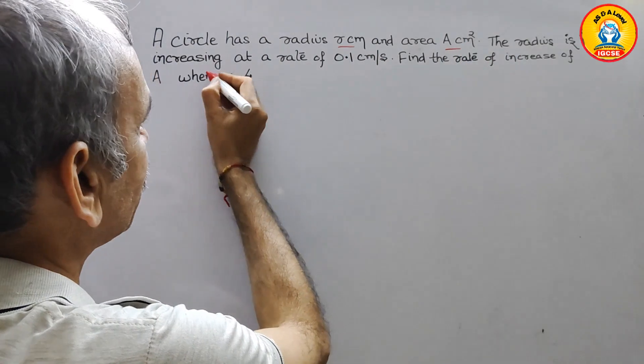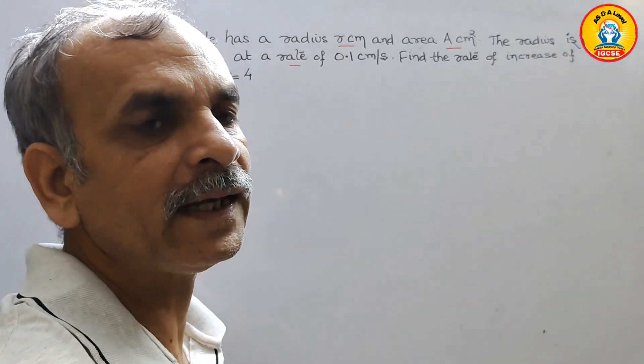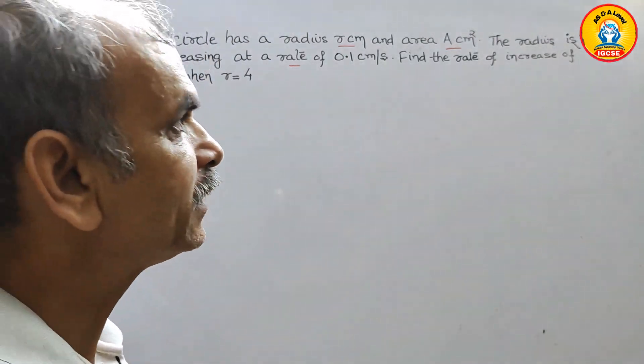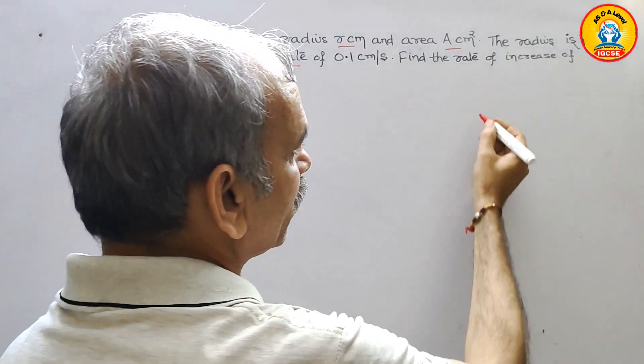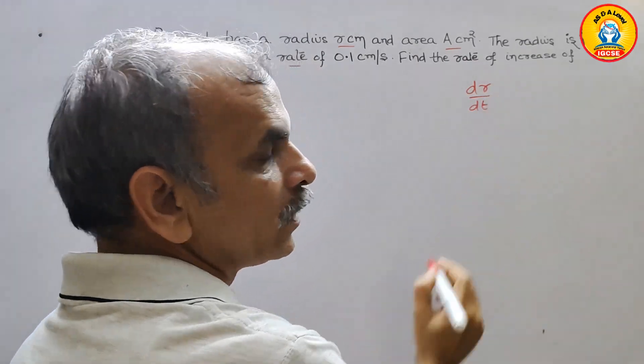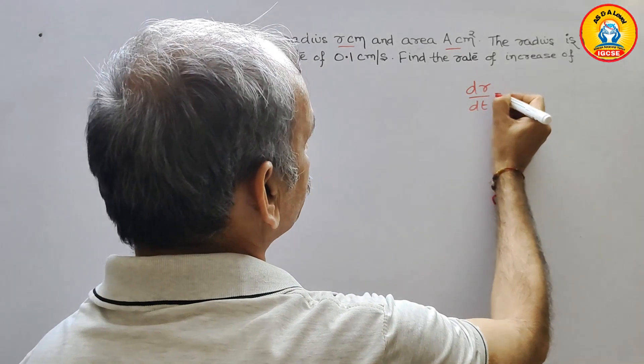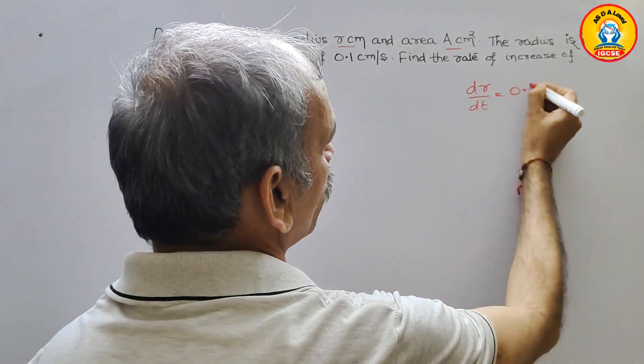The radius is increasing at a rate of 0.1 centimeter per second. That means this is nothing but dr by dt, radius with respect to time. That is equal to 0.1.